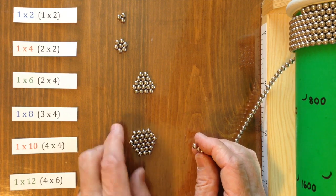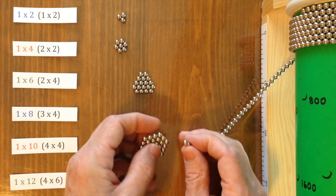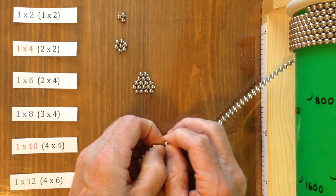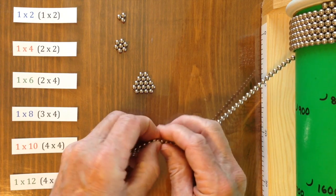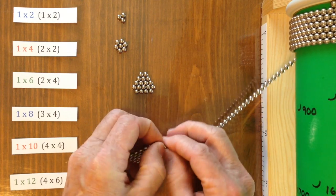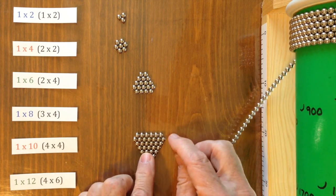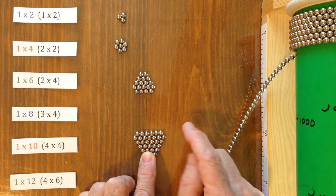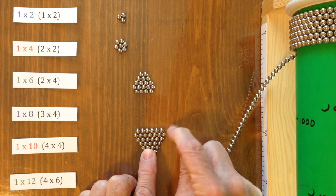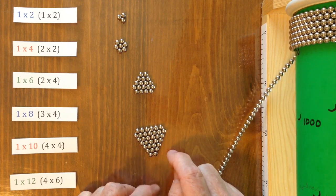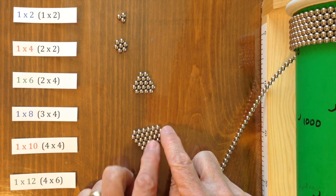Then to get to the point where you're a 1 by 8, you need to add a couple of magnets on each short end. And this brings it up to a 2 by 6. And then at the end, we'll add the magnets in the corners to make 1 by 8.